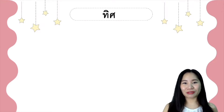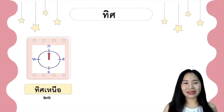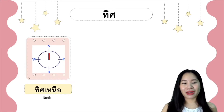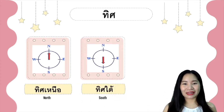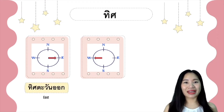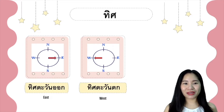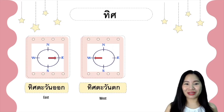In Thai, the word for direction is 'thit.' For north we say 'thit neua,' and for south we say 'thit tai.' For east we say 'thit tawan ok,' and for west we say 'thit tawan tok.' The word 'tawan' means 'the sun.' When the sun comes out it is in the east — that's why we say 'thit tawan ok.' When the sun goes down in the west, we say 'thit tawan tok.'